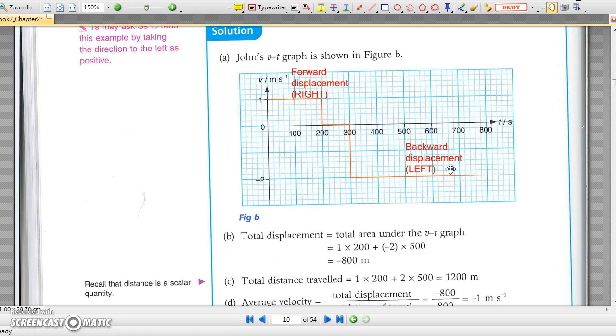The positive area represents the displacement to the right, and the negative represents the displacement to the left.